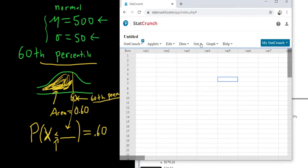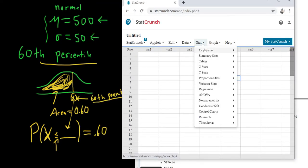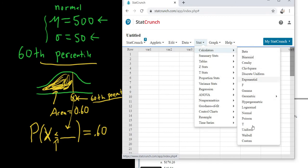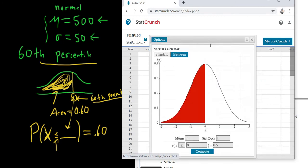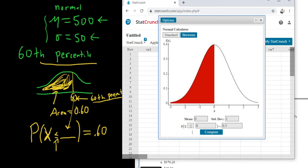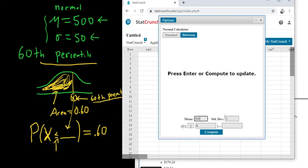So we go to Stat, Calculators, and then you go to Normal, because the problem said Normal. And then right here, the mean is 500. Standard deviation is 50, so 5, 0. And then it's 0.60. So that goes in this box here.